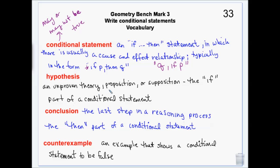The hypothesis is the unproven theory — a proposition or supposition. It's the part that comes after the word 'if.' So a proposition like 'you're going to clean your room' is the supposition. The conclusion is the last step in a reasoning process — it's also the 'then' part of the conditional statement. The conclusion of you cleaning your room is that you'll get allowance.